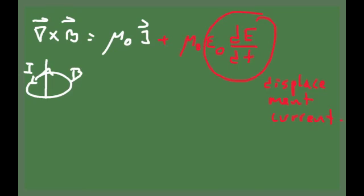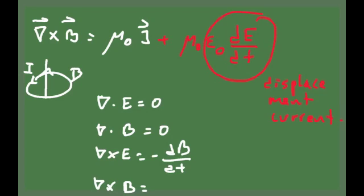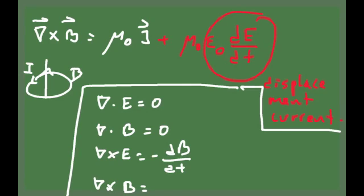Writing these equations again for empty space: Faraday's law gives the curl of E. And now with the additional term that Maxwell incorporated, the last equation reads that the curl of B in empty space is equal to mu sub zero epsilon zero times dE/dt. So now a change in electric field can generate a magnetic field, and a change in magnetic field can generate an electric field.